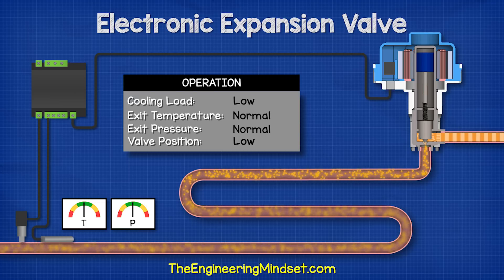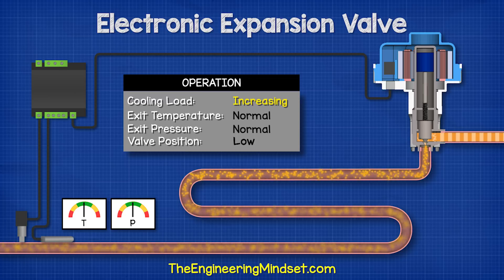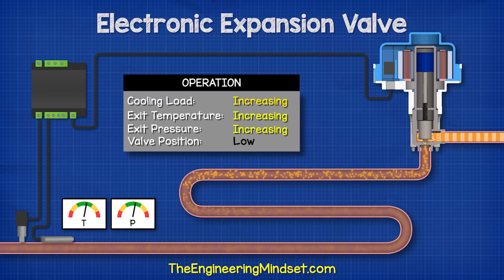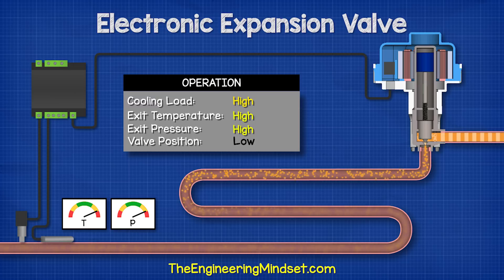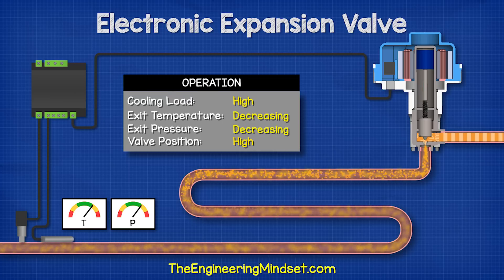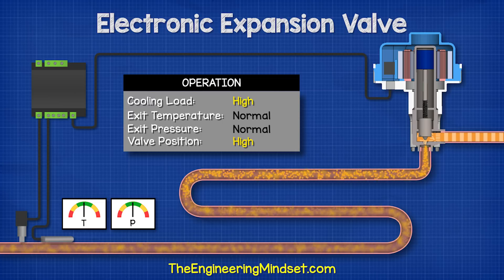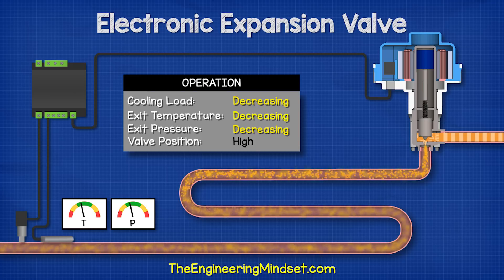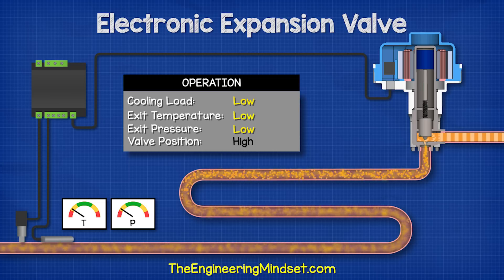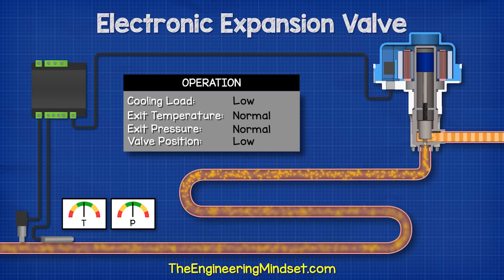When the cooling load on the evaporator suddenly increases, the refrigerant is going to boil much faster. There isn't enough refrigerant currently inside to cover this demand so the suction line temperature and pressure will increase. The sensors detect this and so the controller tells the valve to open further to allow more refrigerant into the evaporator. When the cooling load decreases, the refrigerant will boil more slowly so there will be too much refrigerant inside the evaporator. The temperature and the pressure will therefore decrease, and the controller tells the valve to close further to reduce the amount of refrigerant entering the evaporator and maintain the correct superheat.